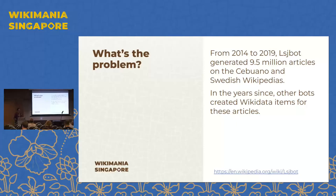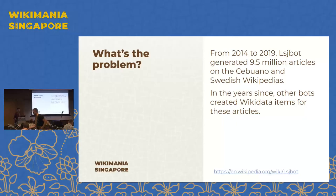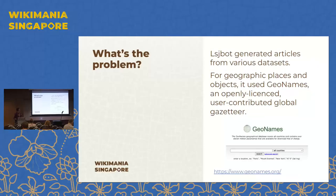The problem is that from 2014 to 2019, LSJBOT — which you might have heard of, there's a Wikipedia article about it — generated 9.5 million articles on the Cebuano and Swedish Wikipedias. I believe the Swedish Wikipedia deleted a lot of these articles, but a lot of the ones on the Cebuano remain. In the years since, other bots went and created Wikidata items for the articles that were in the Cebuano Wikipedia, meaning there are many thousands of duplicates, mostly for geographic places.